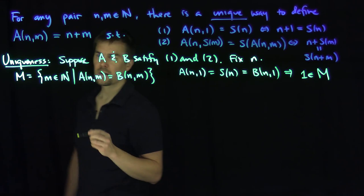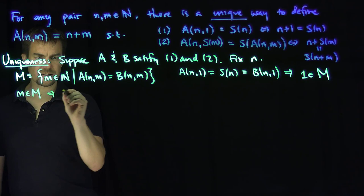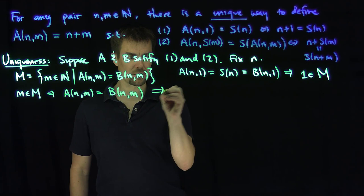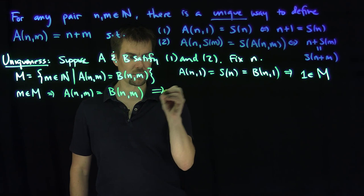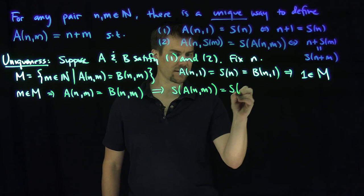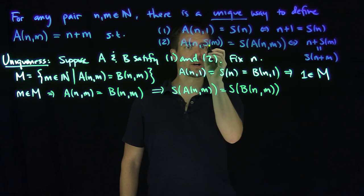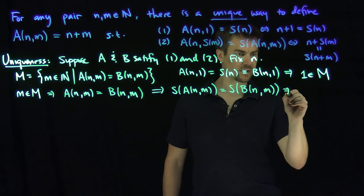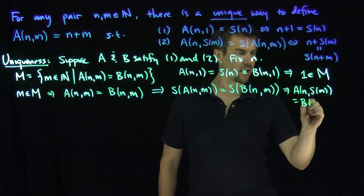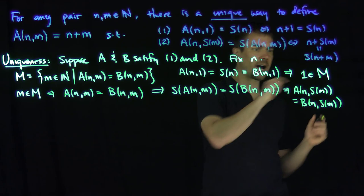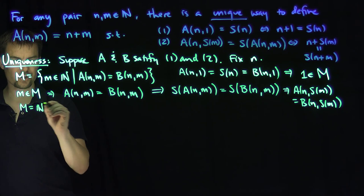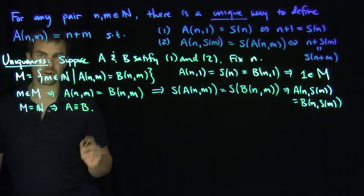Now if m is in M, that says A(n,m) equals B(n,m). By one of the Peano axioms, I can take the successor of this relationship, so S(A(n,m)) equals S(B(n,m)). By property two, I can put the successor on the m, so A(n,S(m)) equals B(n,S(m)). That tells me if m is in M, then S(m) is also in M, so M equals N by induction. This implies that addition operation A is equivalent to addition operation B, so there's only one way to define addition such that properties one and two are true.